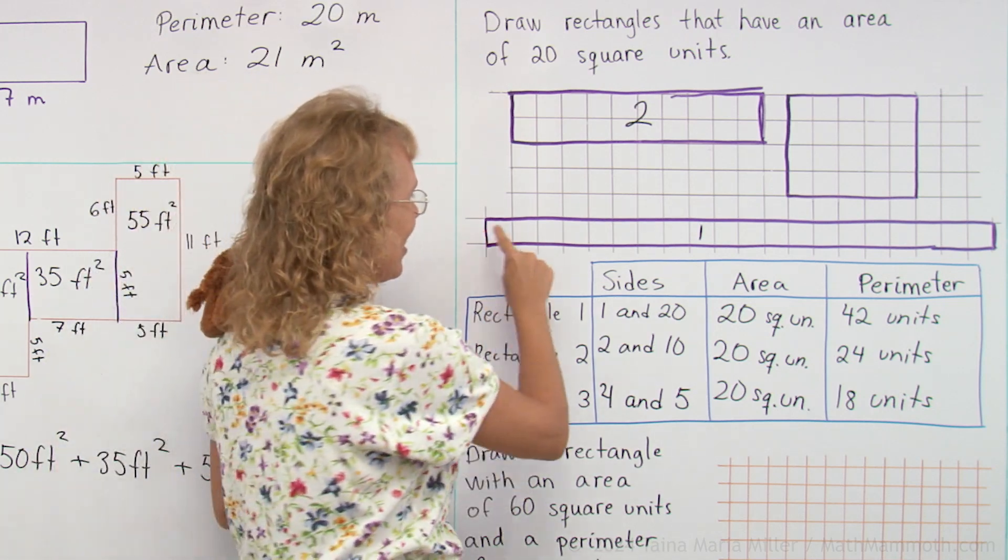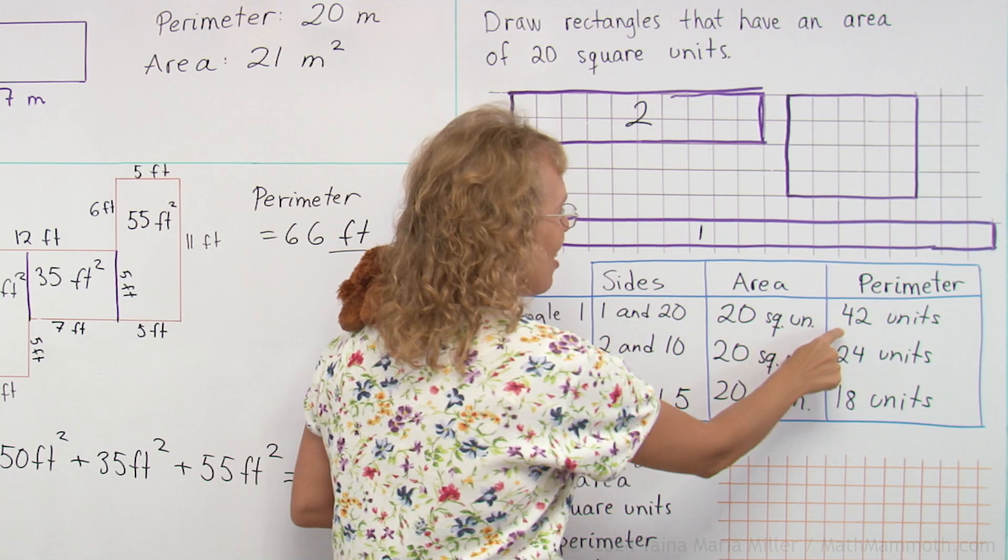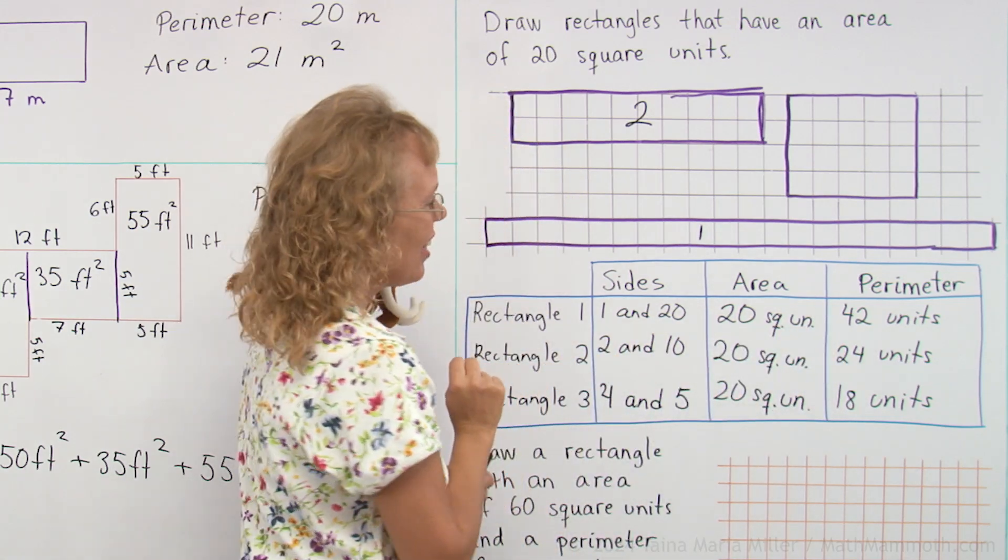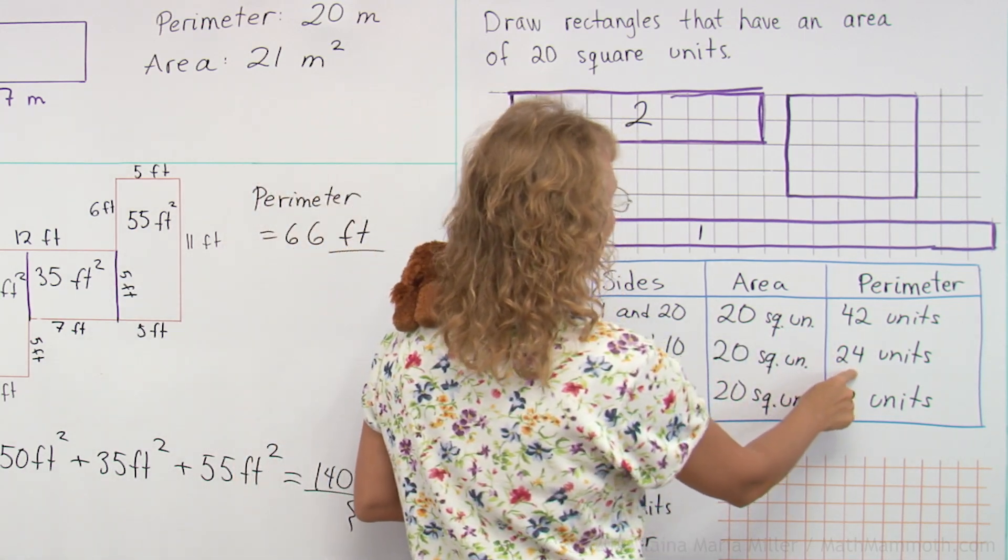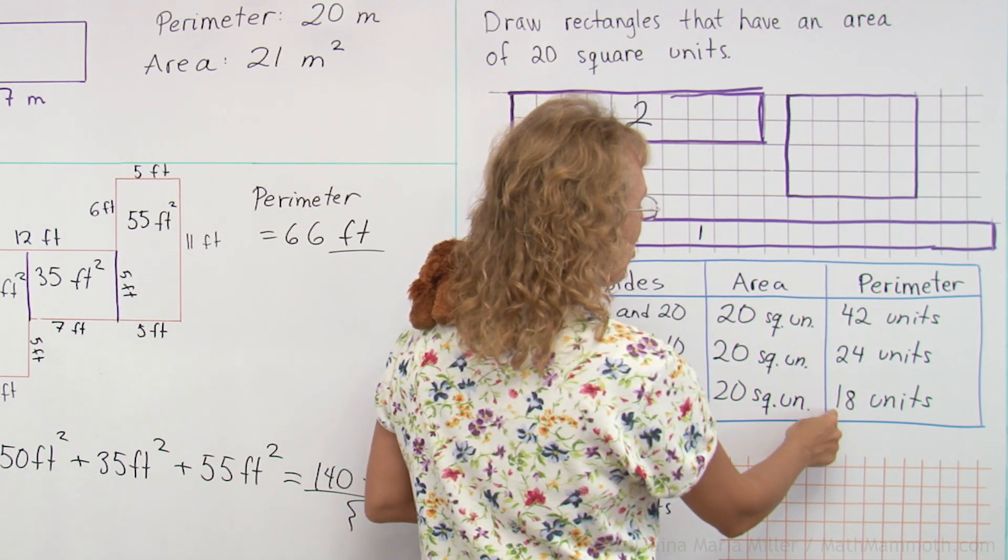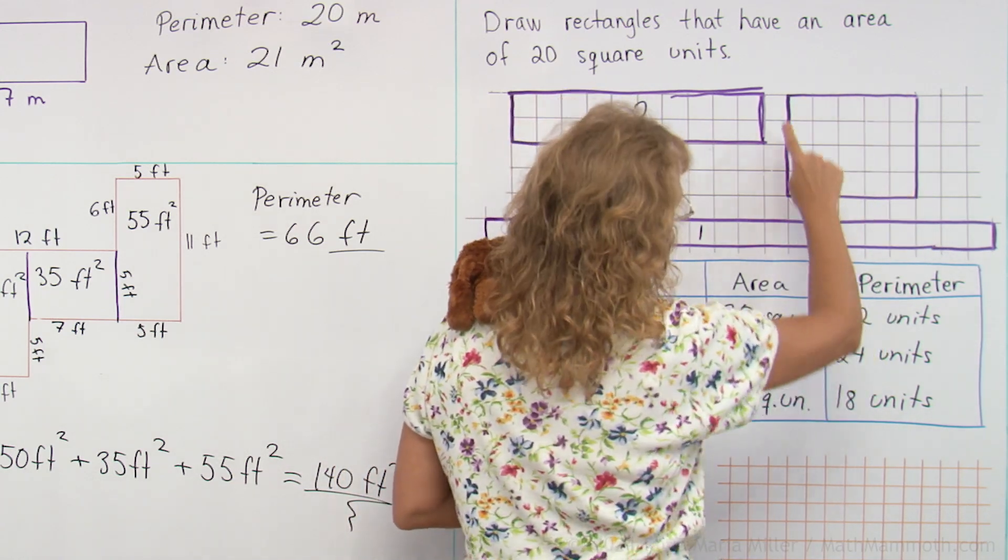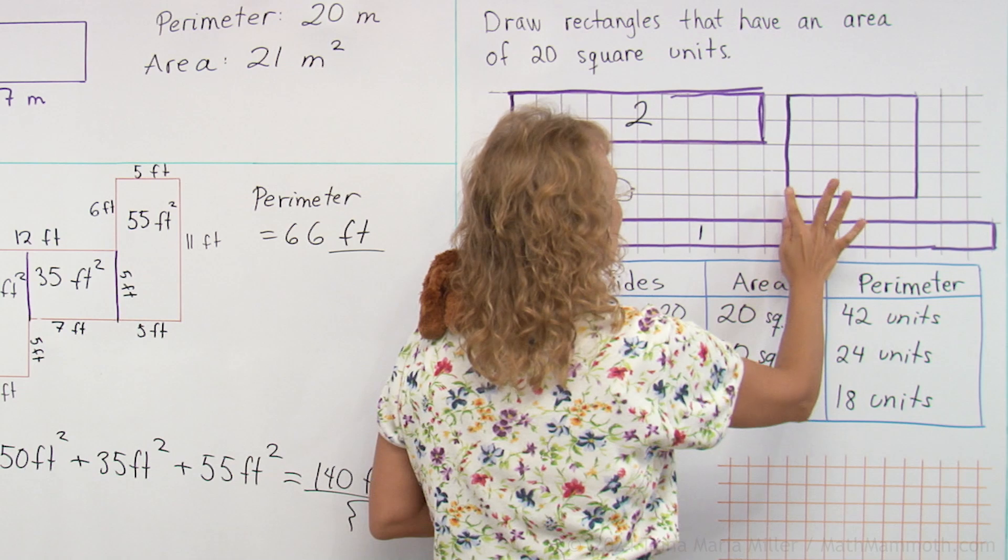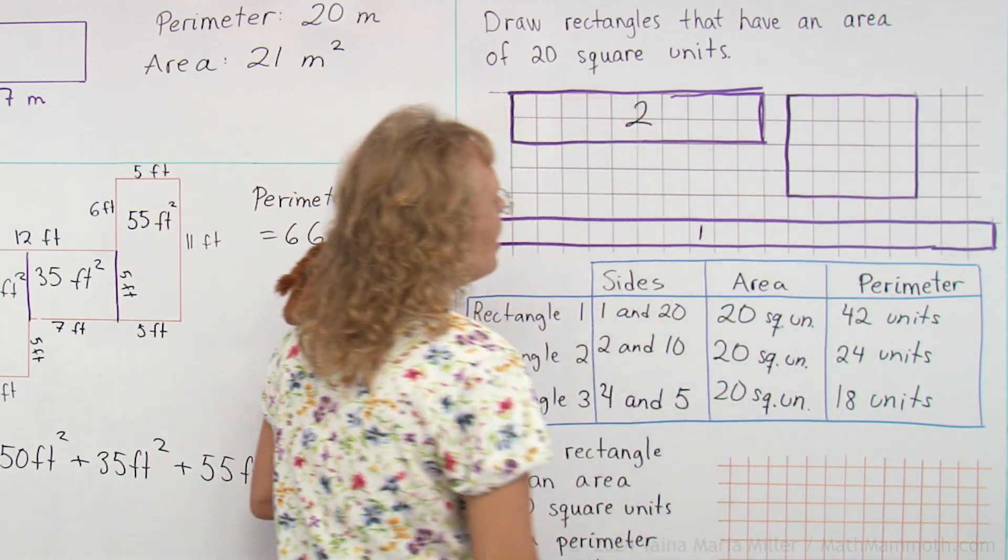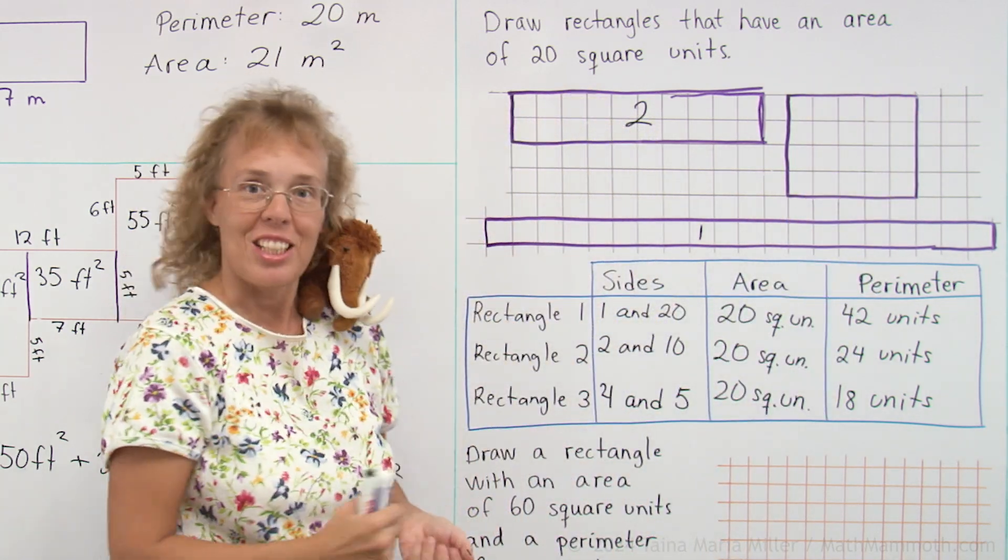Notice here that the skinny rectangle has the largest perimeter. And then this one has kind of a medium one, and then this one has the smallest perimeter. And it is closest to a square. It's not a square, but it is closest to a square here. So that's kind of interesting, right?